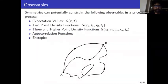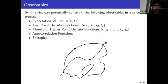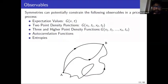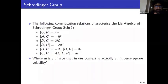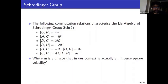What I constrain are different observables of price processes — expectation values, two-point density functions, higher-point density functions, or autocorrelation functions. The ones most people are concerned with are the two-point density functions, which are used in options pricing.